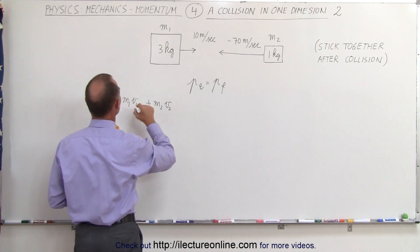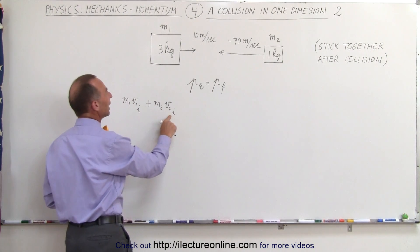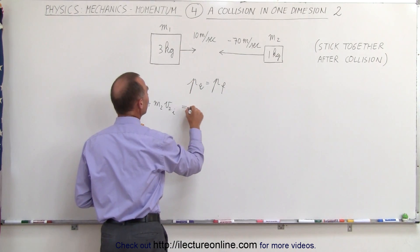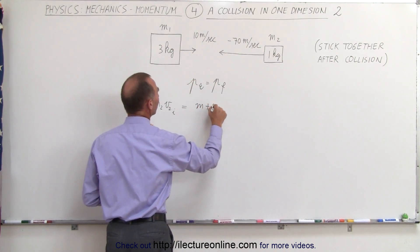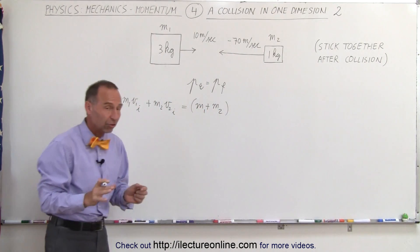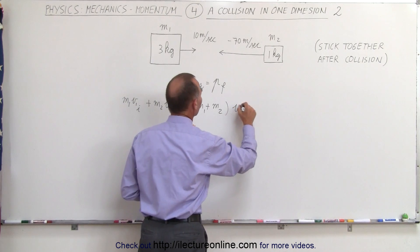plus M2 times some initial velocity of the second object. Oh, this should be initial. Initial should be an I. And in this case that will be a negative 70 meters per second. And that equals the two objects together because they stick together after the collision with some final velocity.